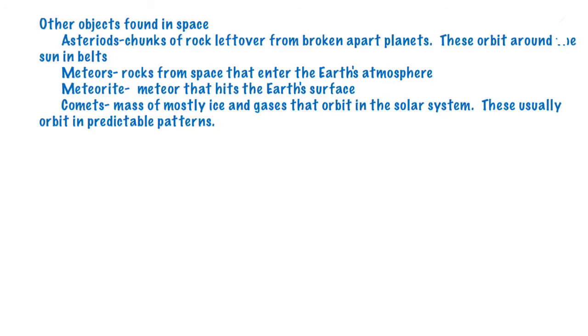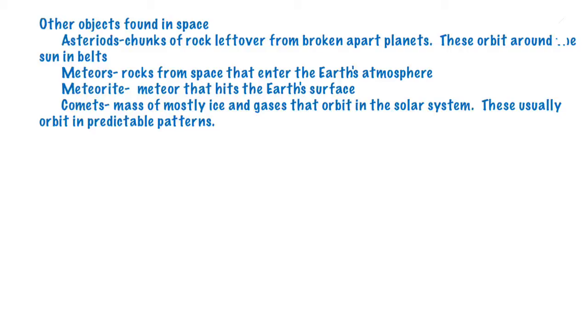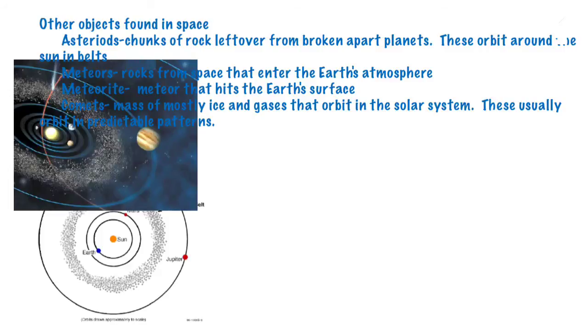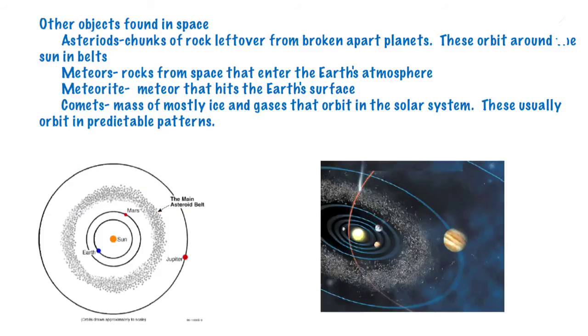A few more objects found in space include asteroids, which are chunks of rock leftover from broken apart planets. These orbit around the sun in belts. There's one between Mars and Jupiter, and here you can see where they're located.